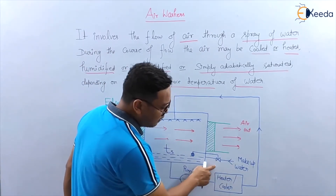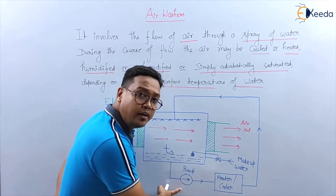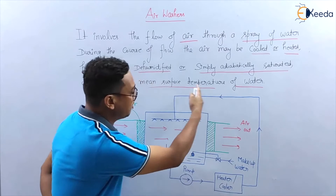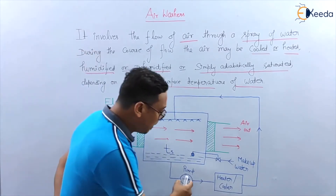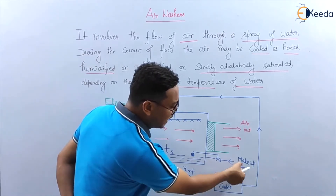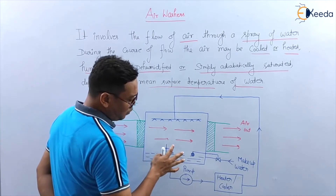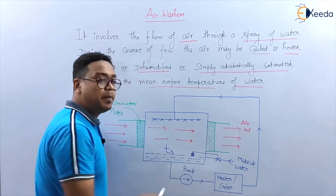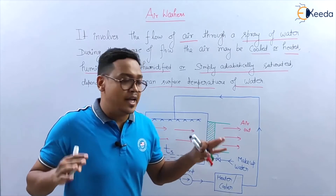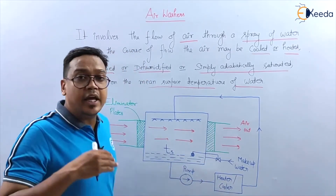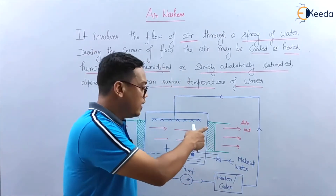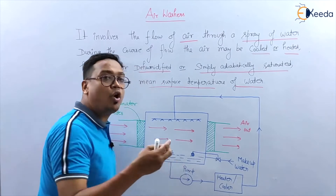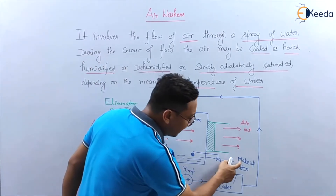This one is the makeup water line. The pump is called a recirculation pump because this water is sprayed, then collected, and again sent back to the sprayer. This is the makeup water. Since the air will carry some water outside and the eliminator plates are not 100% efficient, water quantity in the air washer will go down — that's why this makeup water is used.